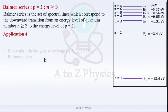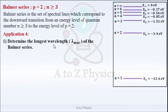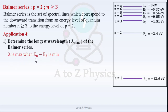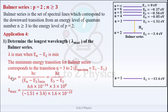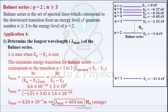Balmer series, Part 1: Determine the longest wavelength λmax. Lambda is maximum when EN minus E2 is minimum. The minimum energy transition for the Balmer series corresponds to the transition N = 3 to N = 2. λmax = Hc/(E3 − E2). Replacing Hc, E3, and E2, we get λmax = 6.54×10⁻⁷ m, which equals 654 nanometers.